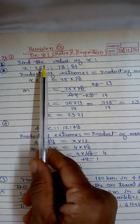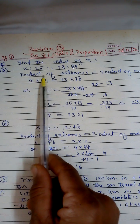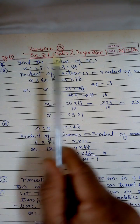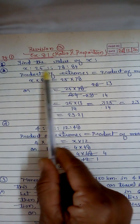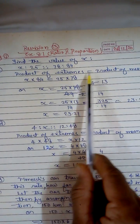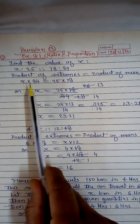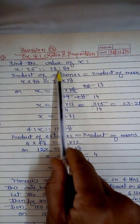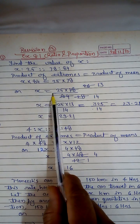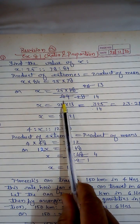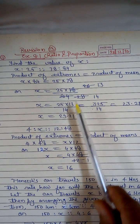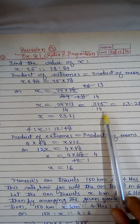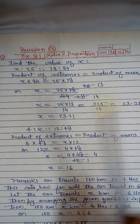If these four numbers are in proportion, then we can write: product of extremes equals product of means. The numbers in the corners are the extremes and the numbers in the middle are the means. So x into 84 equals 25 into 78, which gives us x equals 25 into 78 upon 84. Solving this, x equals 325 upon 14, which gives us 23.21.